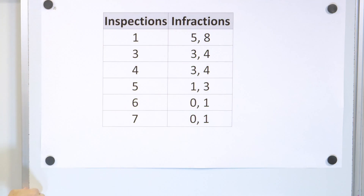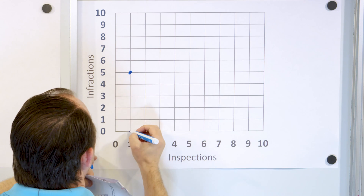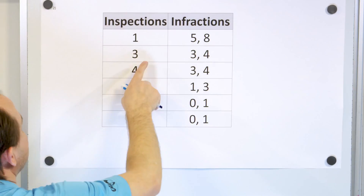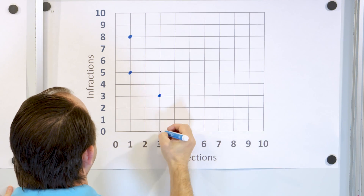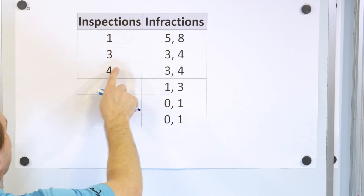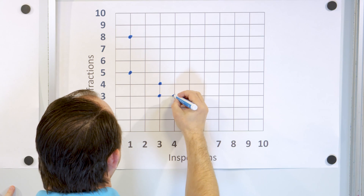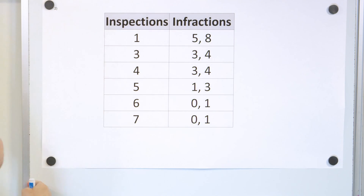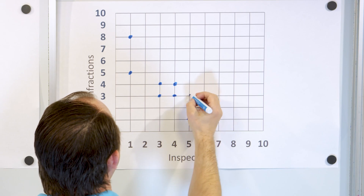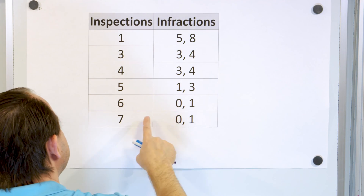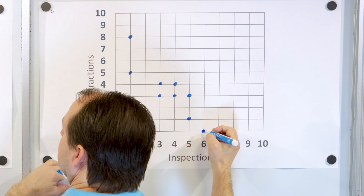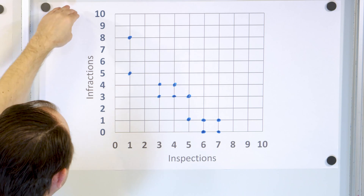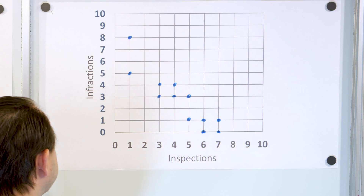We plot one comma five and one comma eight — two different crews with five and eight infractions after one inspection. Then three comma three and three comma four; four comma three and four comma four; five comma one and five comma three; six comma zero and six comma one; seven comma zero and seven comma one. This is what the scatterplot looks like, and you can see there's a general downward trend — with more inspections, people are more careful and infractions come down.